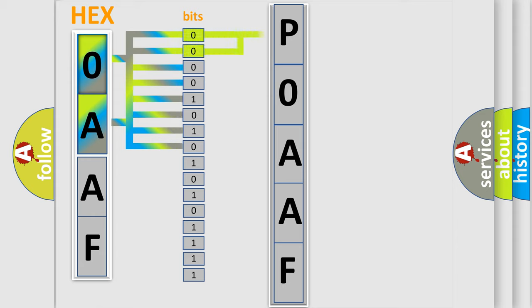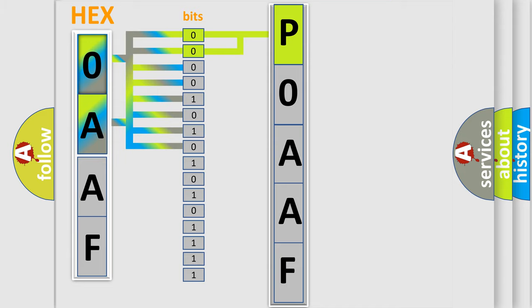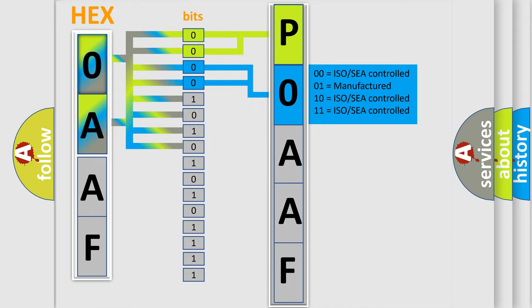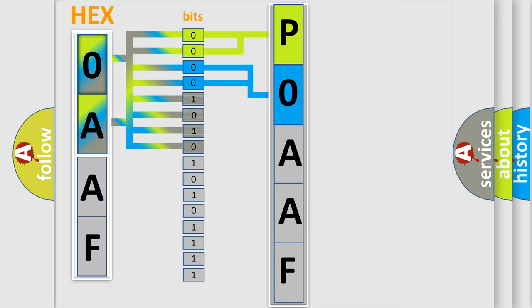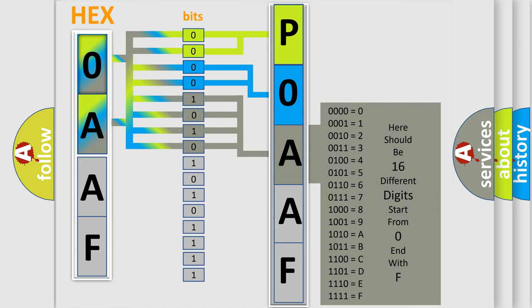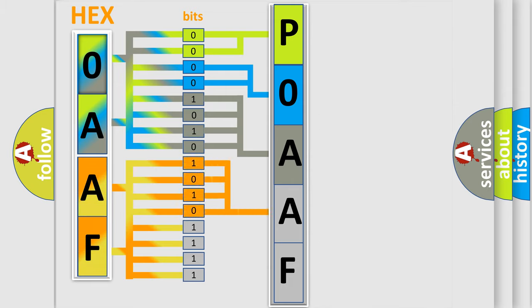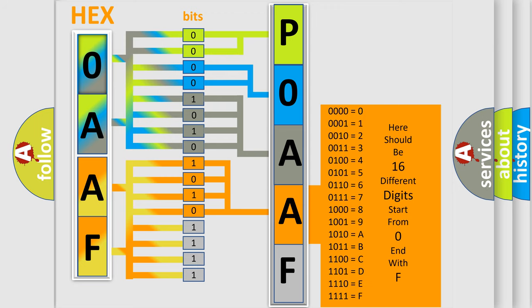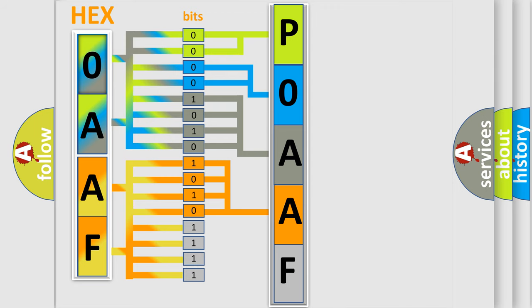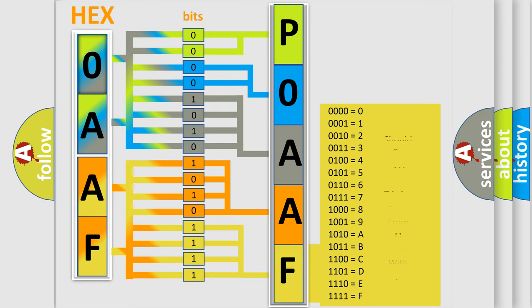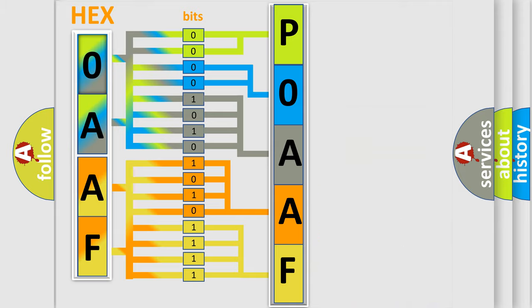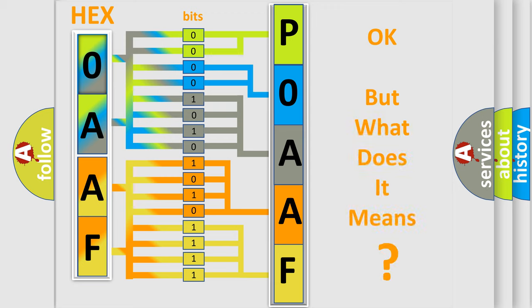By combining the first two bits, the basic character of the error code is expressed. The next two bits determine the second character. The last four bits of the first byte define the third character of the code. The second byte is composed of a combination of eight bits: the first four bits determine the fourth character, and the last four bits define the fifth character. A single byte conceals 256 possible combinations. We now know how the diagnostic tool translates received information into a more comprehensible format.